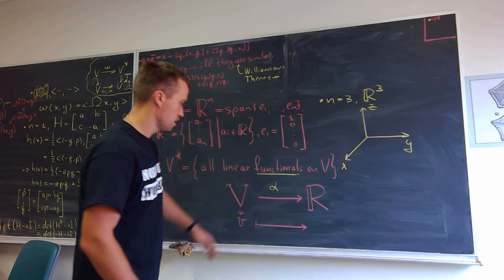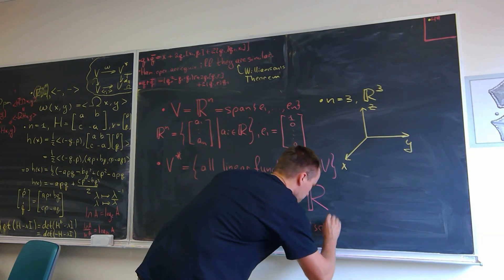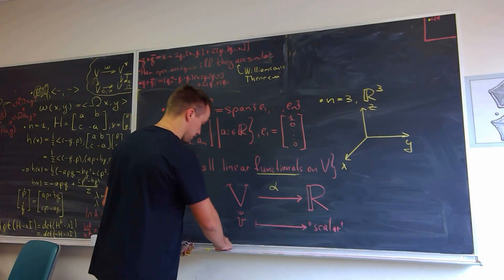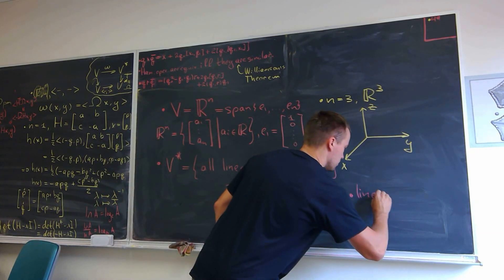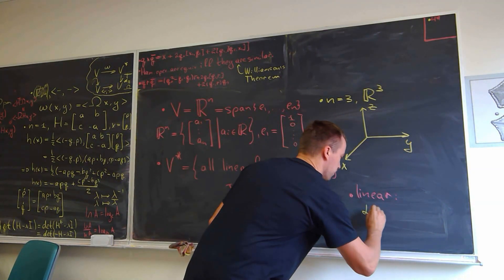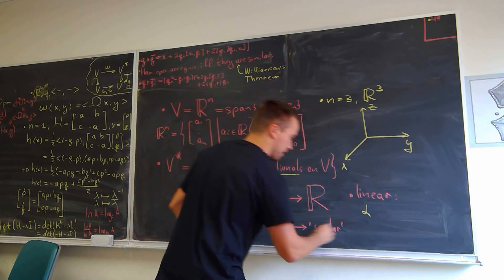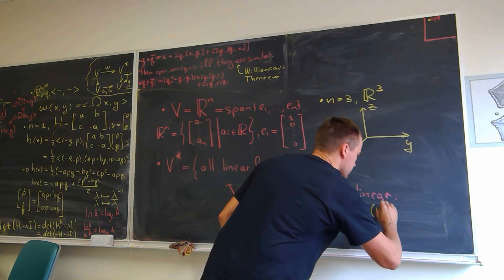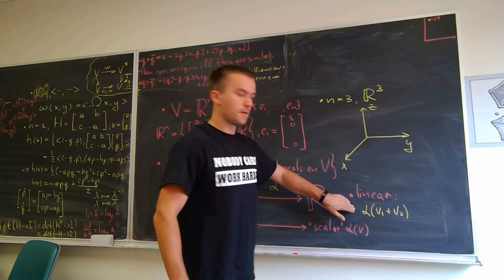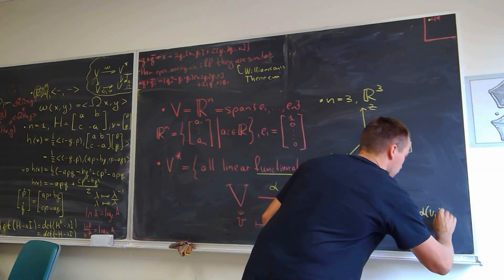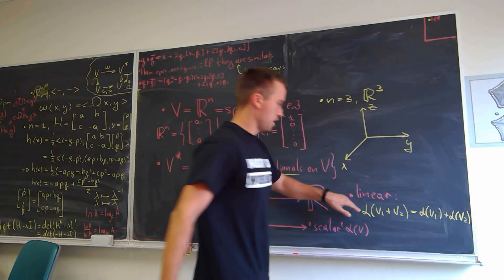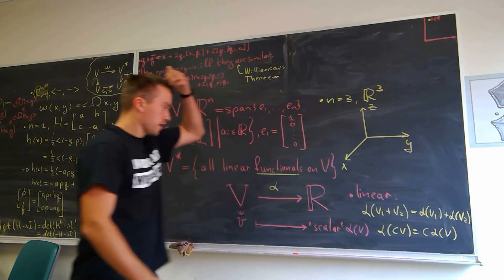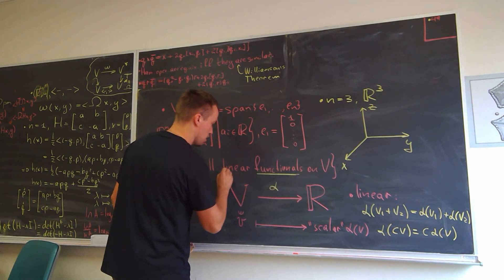Let's see — we take the vector space V, and we're going to write just a scalar. So this is going to be a functional. And I can say the scalar is going to be equal to alpha of V. Linear functional basically means the following property: if I'm going to take the functional of the sum of two vectors, then it's going to be equal to the sum of the functionals — so alpha of V1 plus alpha of V2. And also the same for scalar multiplication: if I'm going to take alpha of some scalar C times V, then it's equal to C times alpha of V.